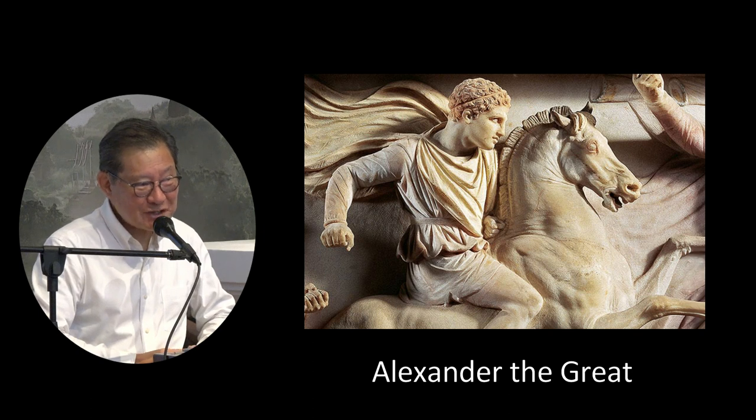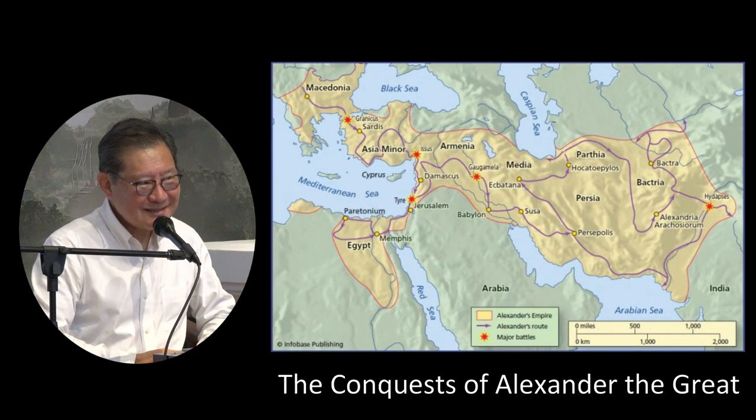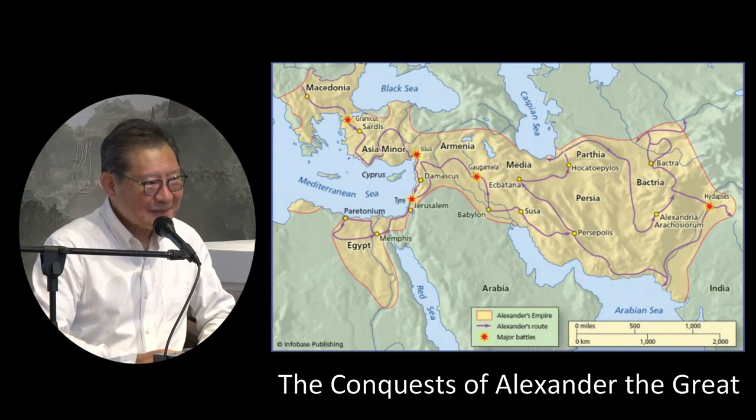Did you know Alexander the Great had something to do with Buddhism? He came from Macedonia, Greece, and started moving around. At a very young age, even before the age of 20, he conquered a big part of Europe, all the way, and even conquered Persia — modern-day Iran. He continued his journey to Central Asia, by which time some of his soldiers got married to local women and were quite tired. They didn't want to fight anymore, so they received a big pension and decided to settle in Central Asia. So these are Greek Buddhists.